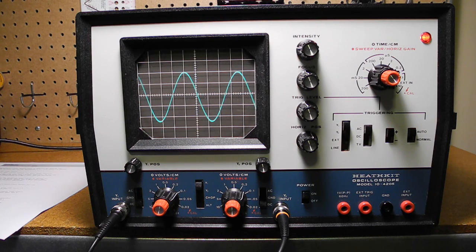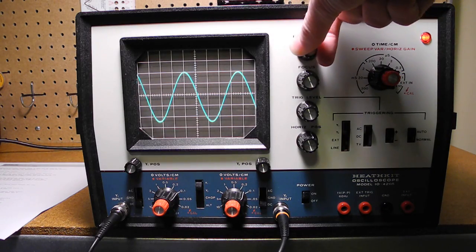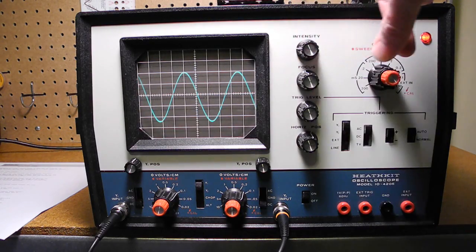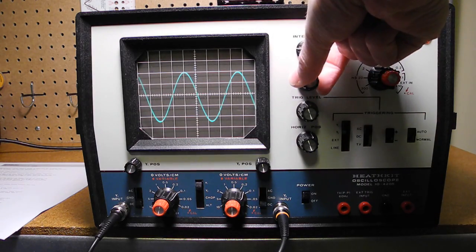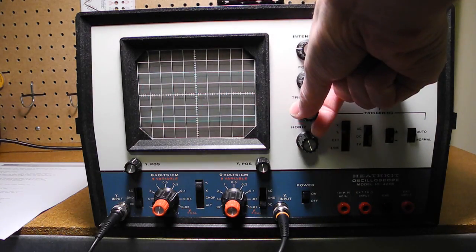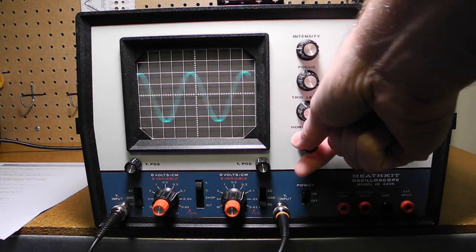So let's run through some of the controls. We have intensity control, adjusting the brightness of the trace, focus, trigger level which we can adjust to trigger on the corresponding position of the waveform, and horizontal position.